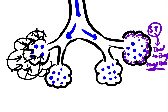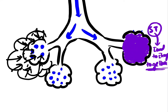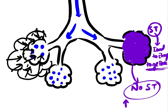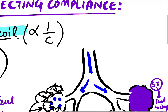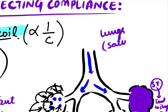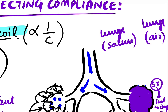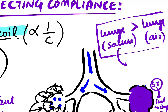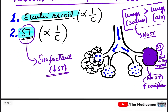If the entire alveolus is filled with fluid rather than just lined with water molecules, there will be no surface tension, and therefore compliance will be higher. So if one lung is filled with saline and another with air, the compliance of the saline-filled lung will be more, because there is no surface tension in the fluid-filled case.